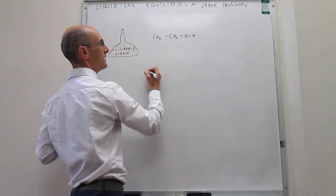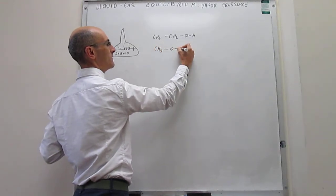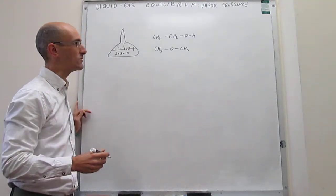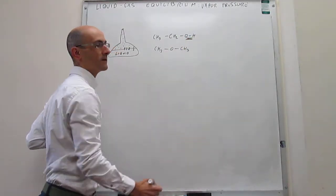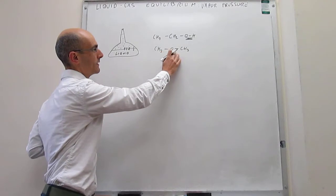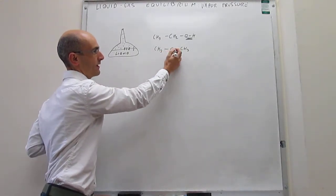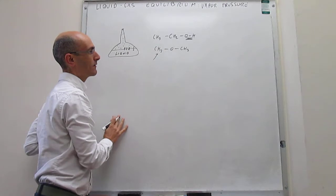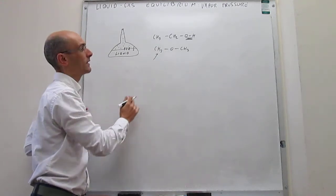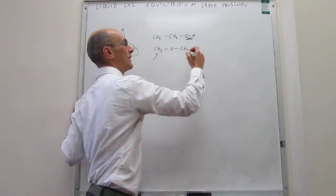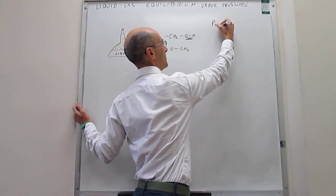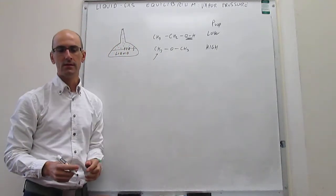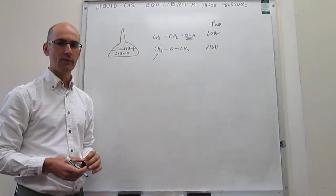For example, we can examine how the vapor pressure will differ for two liquids: ethanol and dimethyl ether. These two molecules have exactly the same molar mass but very different intermolecular interactions. In ethanol you have the ability to form a hydrogen bond, however in dimethyl ether you cannot donate a hydrogen bond — you have a very strong polar bond but the interactions between dimethyl ether molecules are very weak. So the vapor pressure (P_VAP) of ethanol would be quite low, and for dimethyl ether it would be very high.